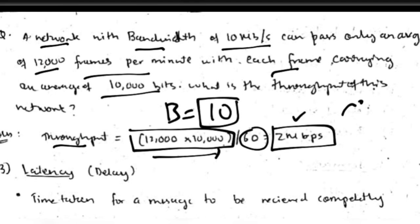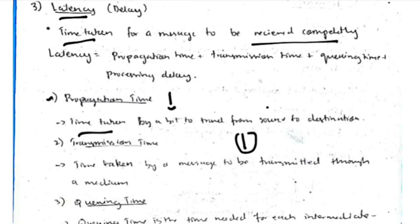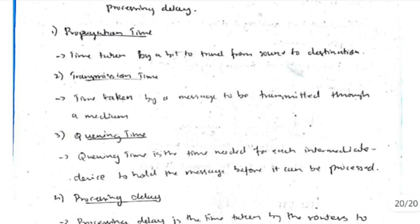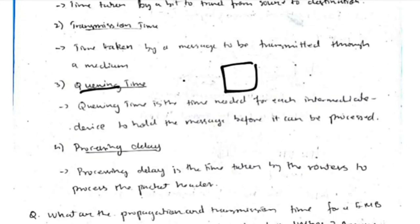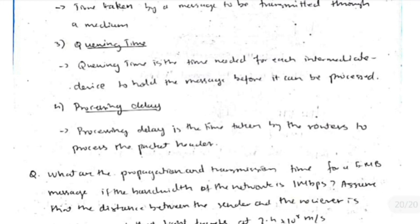Latency is the time taken for a message to be received completely. Latency depends on four factors: propagation time — the time for a single bit to travel from source to destination; transmission time — the time for the entire message to be transmitted through a medium; queuing time; and processing delay — the time taken by routers while processing data for packet headers.